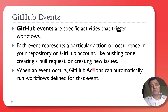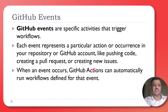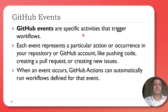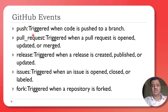GitHub Actions follows two important components: GitHub events and GitHub Actions. GitHub events are specific activities that trigger the workflows. For example, the push event is triggered whenever code is pushed to a branch.